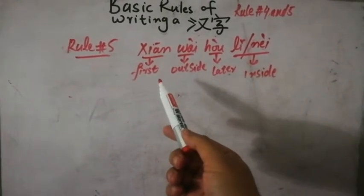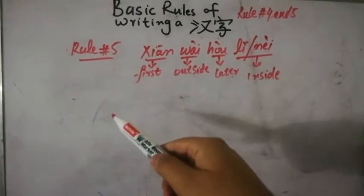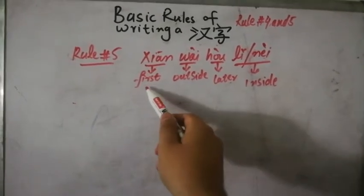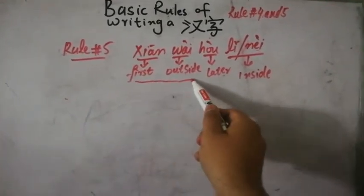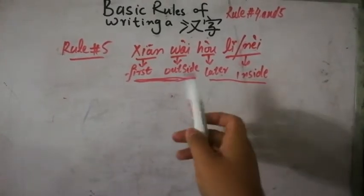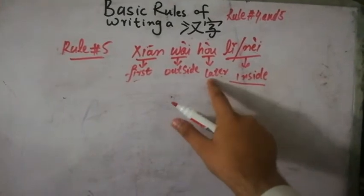Write the outside of the character first and then write the inside of the character later. Inside, lǐ, nèi.